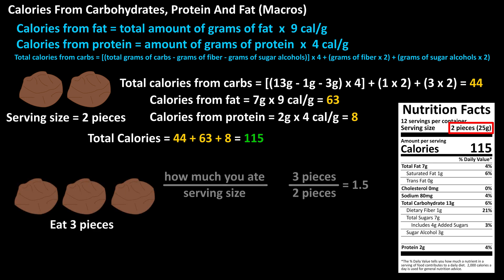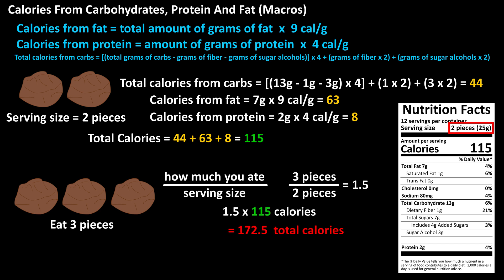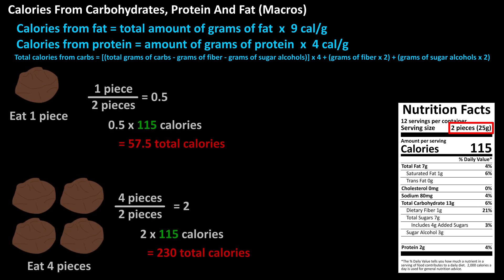To adjust, you would divide the number of pieces you ate by the serving size — three pieces divided by two pieces equals 1.5 — then multiply that 1.5 by the total calories calculated for one serving size. So 1.5 times 115 calories equals 172.5 calories.